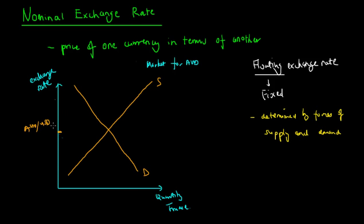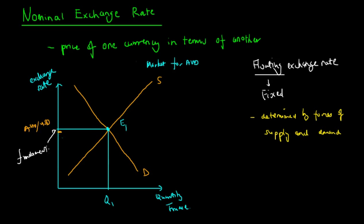The demand curve is downward sloping and the supply curve is upward sloping, because as the exchange rate goes up people are willing to sell more of their dollars. We meet at an equilibrium point E1, with an equilibrium quantity traded of Q1 and an exchange rate we'll call the fundamental value of the currency, which is equal to the equilibrium price. The value of the Australian dollar is therefore determined by forces of supply and demand.